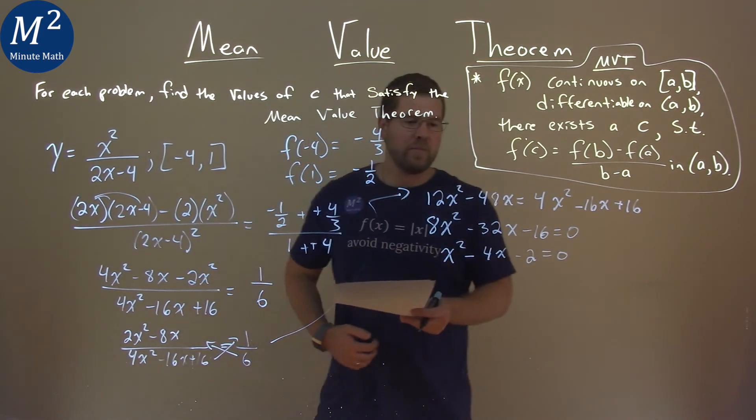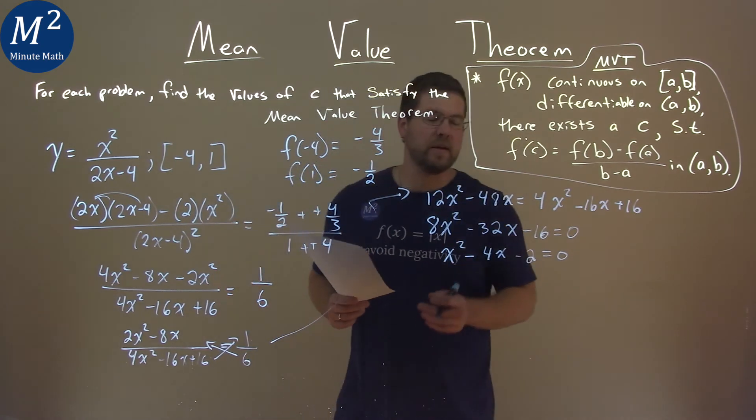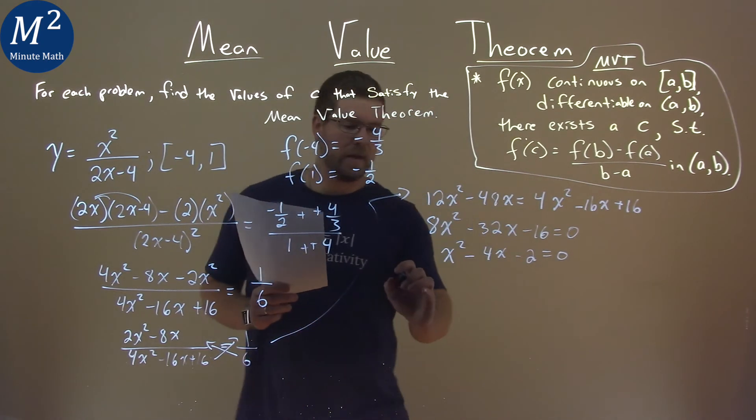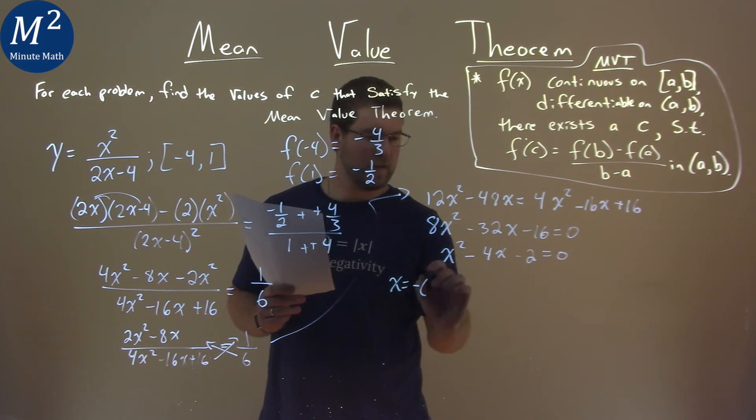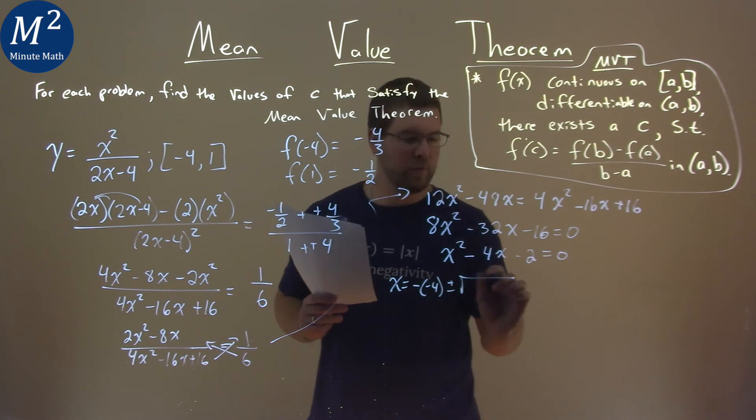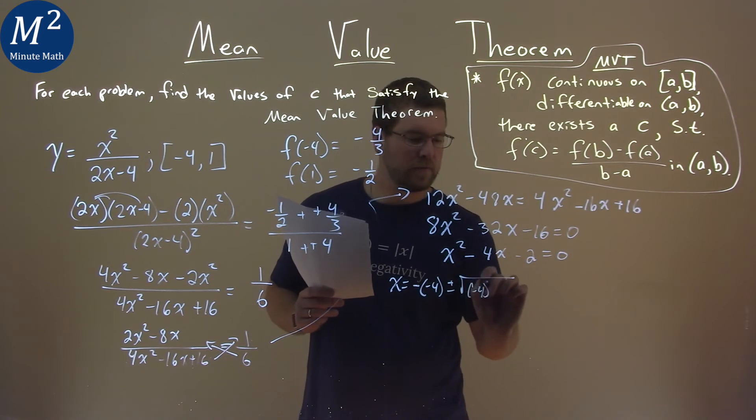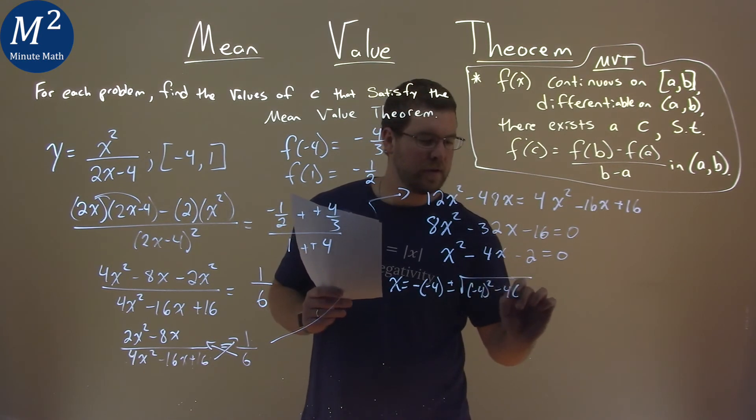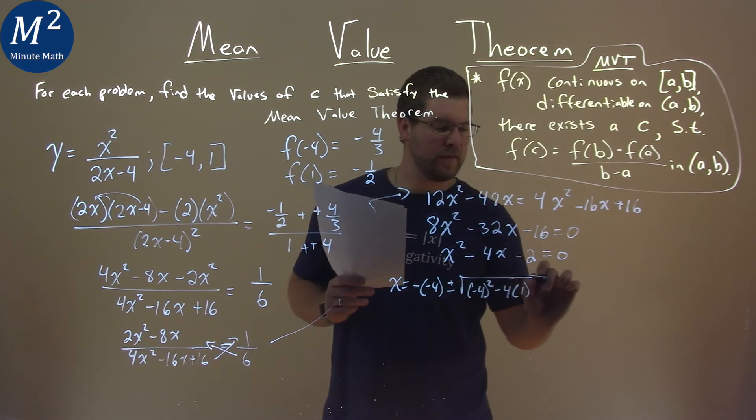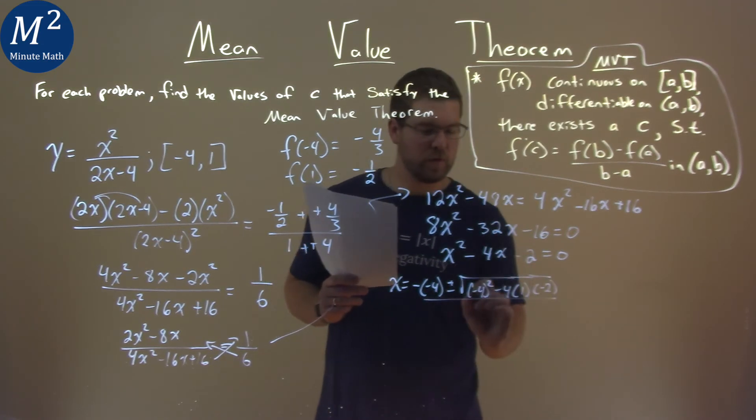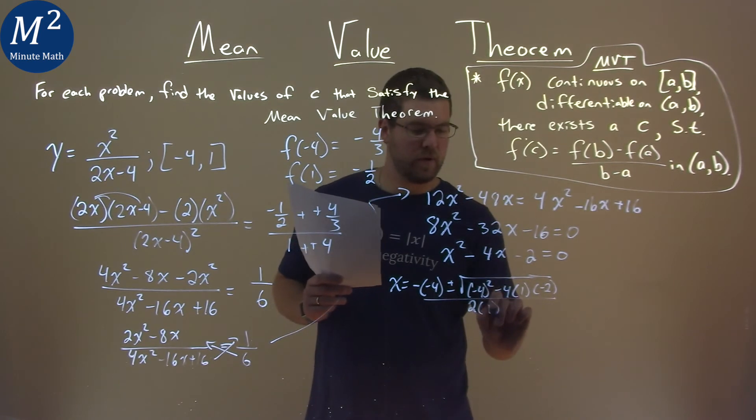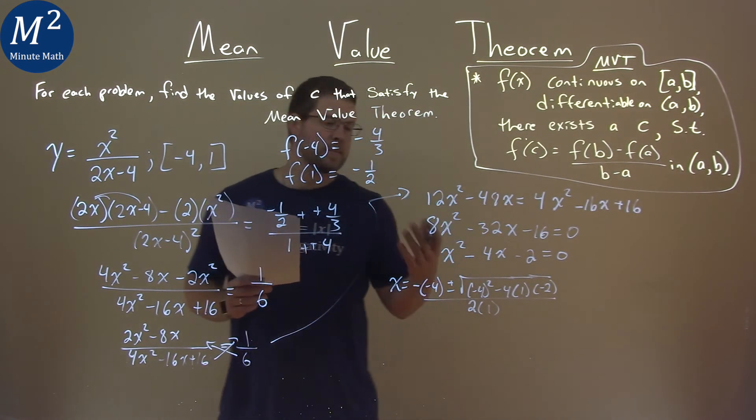So, now from here, we want to use the quadratic formula. So, setting it up, we have x equals negative b value, which is negative 4, plus or minus the square root, negative 4 squared minus 4 times our a value, which is 1, and our c value, negative 2. All over 2 times our a value. This simplifies all out to be x equals, we have 2 minus the square root of 6 and 2 plus the square root of 6.